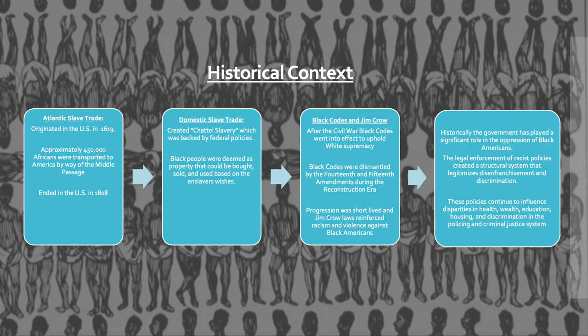After the Civil War, slave codes turned into Black codes, which continued to uphold white supremacy. Though they varied state to state, the idea was that Black people were inferior to white people. Black codes were dismantled by the 14th and 15th Amendments during the Reconstruction Era, and though progression occurred, it was short-lived, and Jim Crow laws reinforced racism and violence against Black Americans. Historically, the government has played a significant role in the oppression of Black Americans. The legal enforcement of racist policies continues to create a structural racist system that legitimizes disenfranchisement and discrimination today.